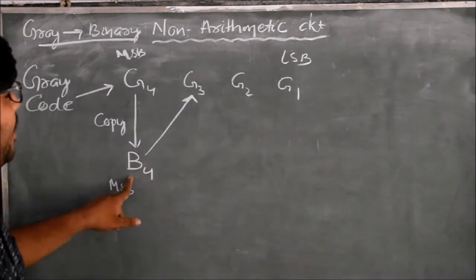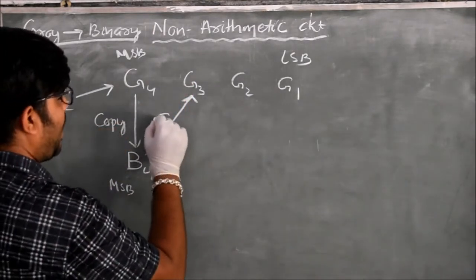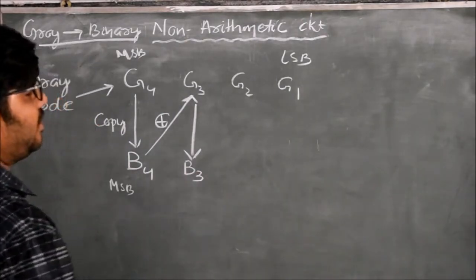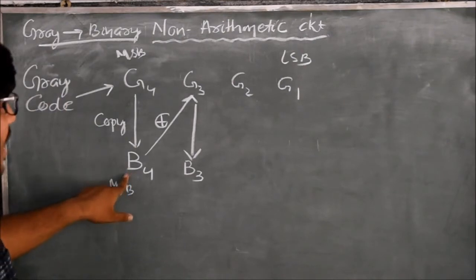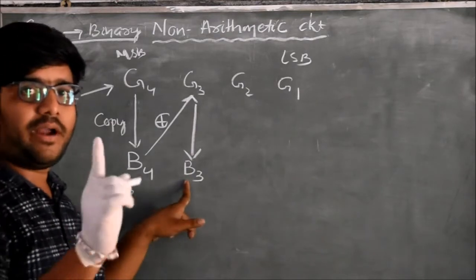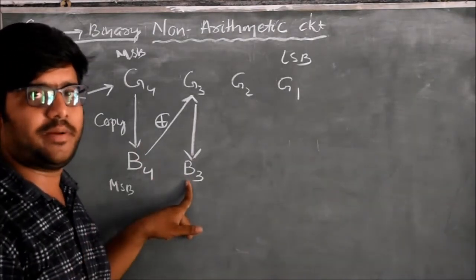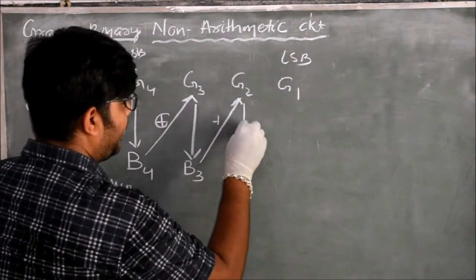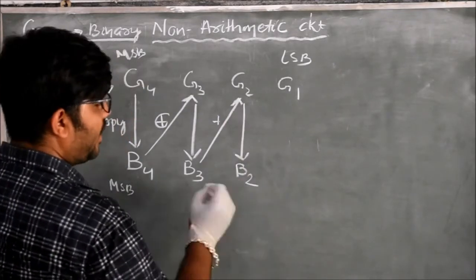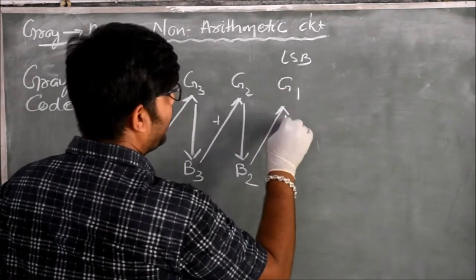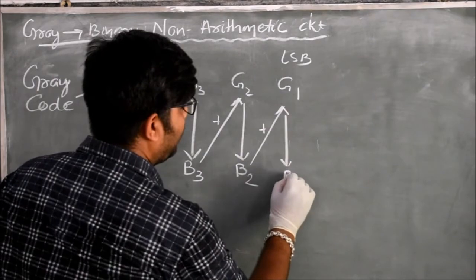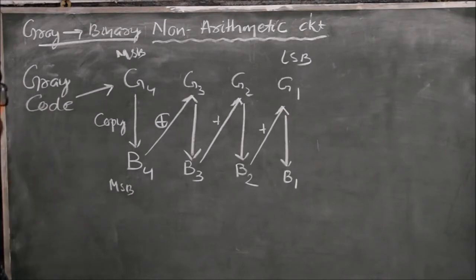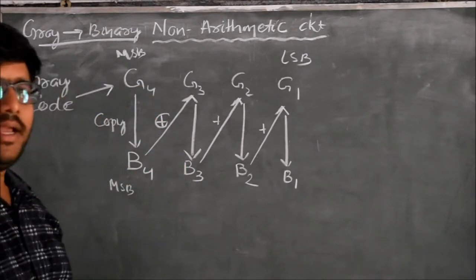The MSB of BCD is then XORed with the next Gray bit to produce B3. We do not consider the carry — we take only the sum term. Then B3 is XORed with G2 and the sum becomes B2. Again, B2 is XORed with G1 and the sum becomes B1. This is the method to convert Gray code into BCD code.